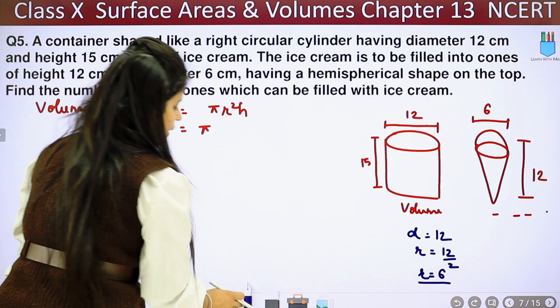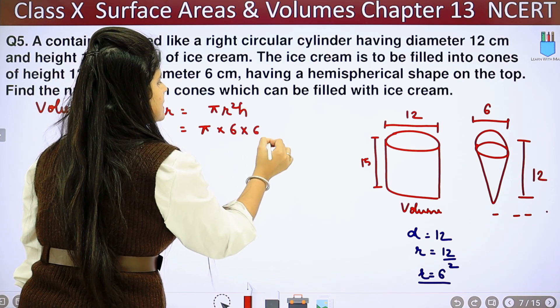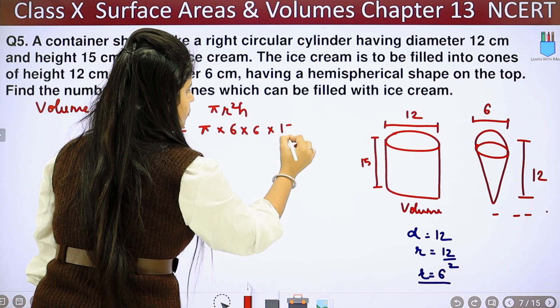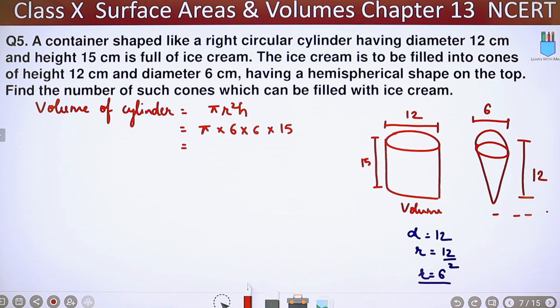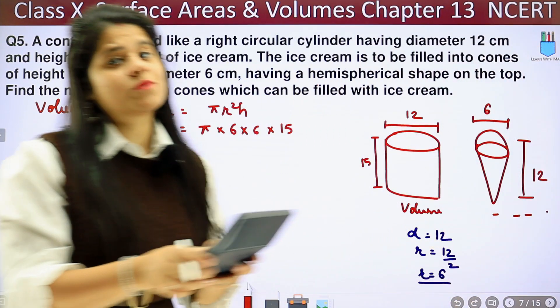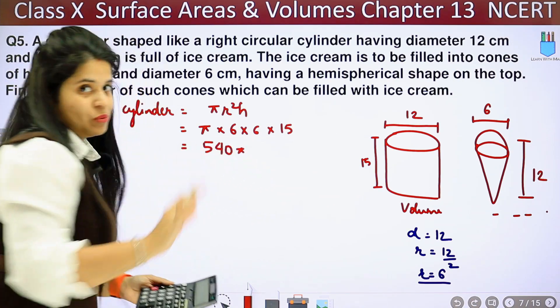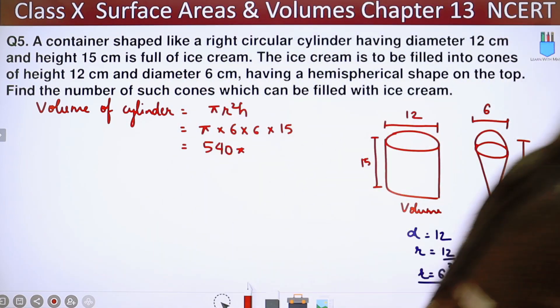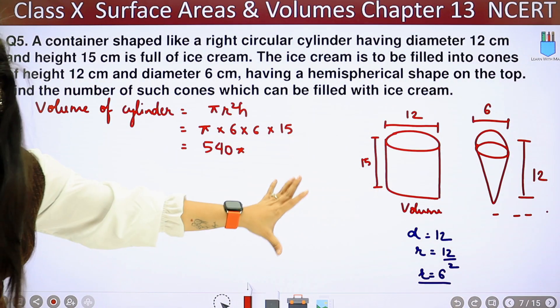So let's put value here. We have r², which means 6 × 6 × height. How much is it? 15 cm. So it will be 36 × 15. I am doing with a calculator, please don't use the calculator. Here I am just doing time save. Volume of cylinder is 540π. That means the volume of ice cream is so much.